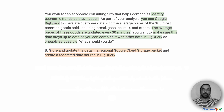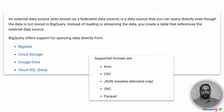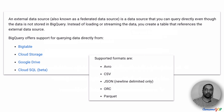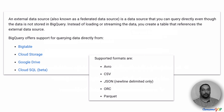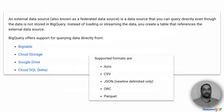Option B suggests storing and updating the data in a regional Cloud Storage bucket and creating a federated data source in BigQuery. A federated data source is something that is not BigQuery itself, but something BigQuery can connect to and query directly. Today there are integrations with Bigtable, Cloud Storage, Google Drive, and Cloud SQL. On Cloud Storage and Google Drive, the data must be in a supported format: Avro, CSV, Newline JSON, ORC, or Parquet. If data is in any of these formats on Cloud Storage, BigQuery queries can integrate with it as an external data source.